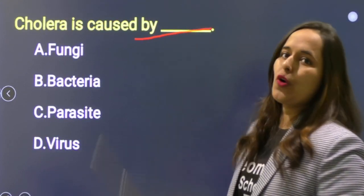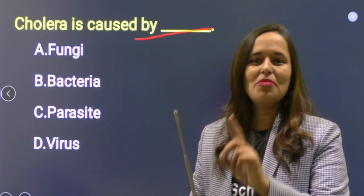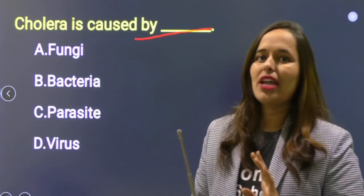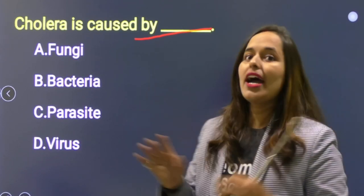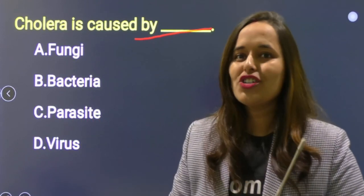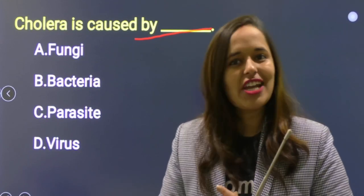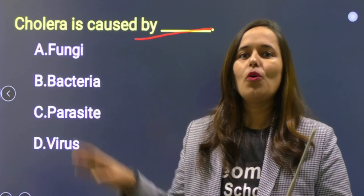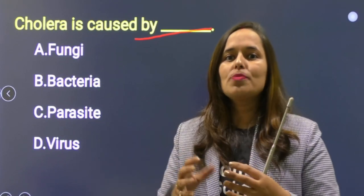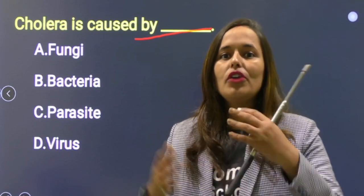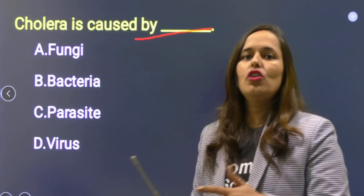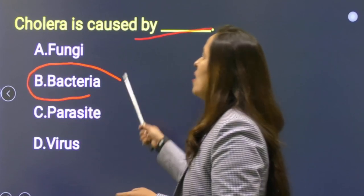Next: Cholera is caused by? यह microbial disease और water pollution chapter से है। Options: fungus, bacteria, parasite, virus. Cholera caused होता है because of bacteria — bacteria is known as Vibrio cholerae, जिसमें polluted water intake करने पर infection हो जाता है। Symptoms: water loss, vomiting। Option B is correct.